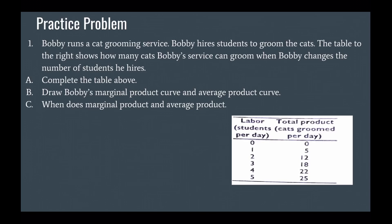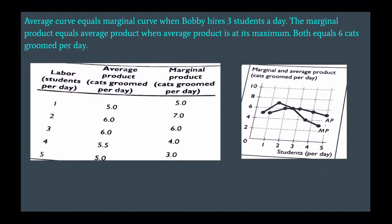Bobby runs a cat grooming service. Bobby hired students to groom the cats. The table to the right shows how many cats Bobby's service can groom when Bobby changes the number of students he hires. Complete the table, draw Bobby's marginal product curve and average product curve, and determine when marginal product and average product are equal.